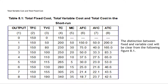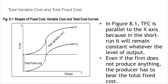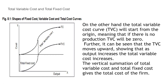The distinction between fixed and variable cost will be clear from Figure 8.1. In Figure 8.1, the total fixed cost curve is parallel to the X-axis because in the short run it remains constant whatever the level of output the firm produces. Even if the firm does not produce anything, the producer has to bear the total fixed cost. On the other hand, the TVC curve starts from the origin, meaning that if there is no production, TVC will be zero. As output increases, the total variable cost also increases. The vertical summation of TVC and TFC gives the total cost of the firm.